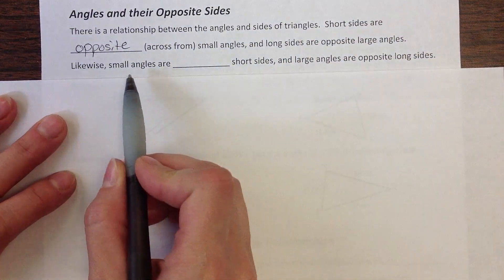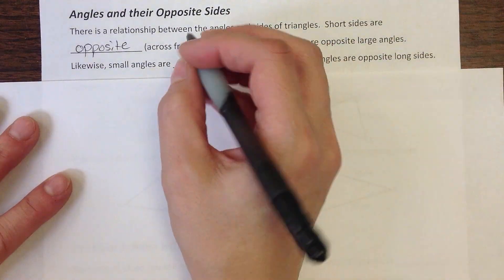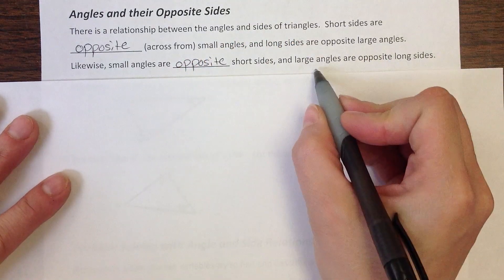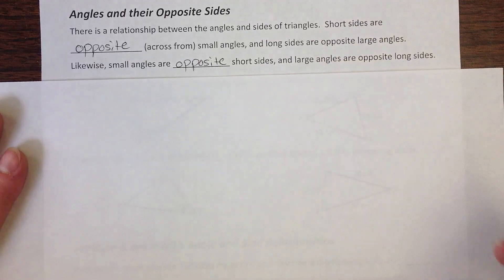Likewise, this works in the other direction. If you have a small angle, small angles are opposite short sides, and large angles are going to be opposite long sides.